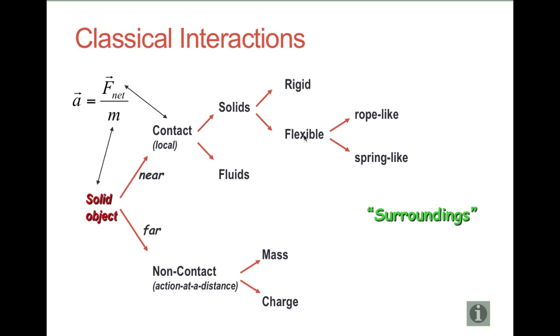If it's in contact with a rigid object, those will either exert normal forces or frictional forces. Ropes will exert tensional forces. Springs will exert elastic or Hooke's Law forces. Fluids can exert either a buoyant force or a drag force. Then we can look at things it's not in contact with, and they can exert forces by virtue of both objects having mass, and that'll be a gravitational force. If they have electrical charges, they can exert electric or magnetic forces.